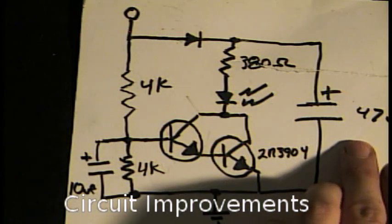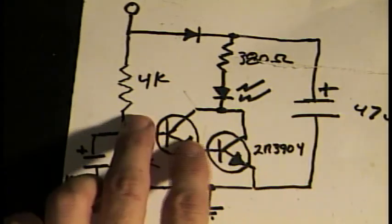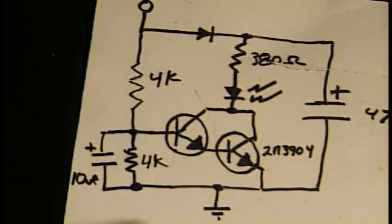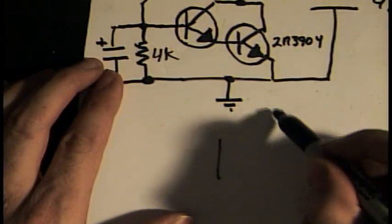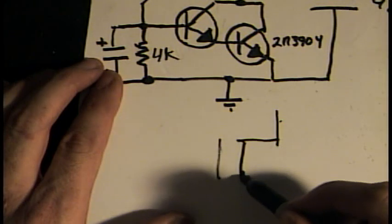This circuit required that I use very large capacitors because the circuit wasn't very efficient. So I replaced the bipolar transistors with the MOSFET, which has a very high impedance gate.